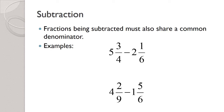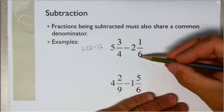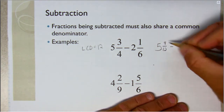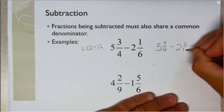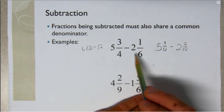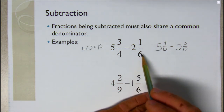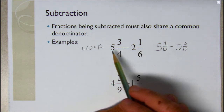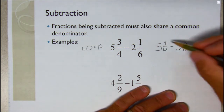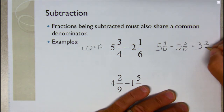Subtraction is very similar — we still need a common denominator. Let's look at five and three-quarters minus two and one-sixth. The common denominator is twelve. Five and three-fourths becomes five and nine-twelfths; two and one-sixth becomes two and two-twelfths. We leave them as mixed numbers. Five minus two is three, and nine-twelfths minus two-twelfths is seven-twelfths. Answer: three and seven-twelfths.